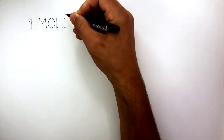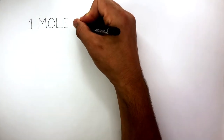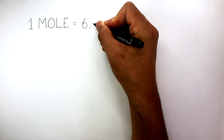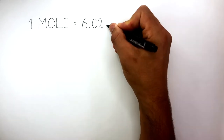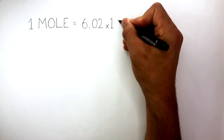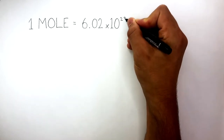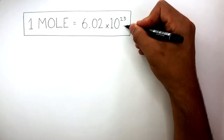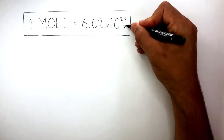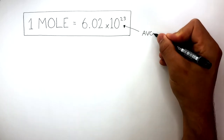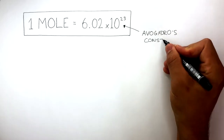One mole is a number, and it equals 6.02 times 10 to the power of 23. This huge number is called Avogadro's constant.